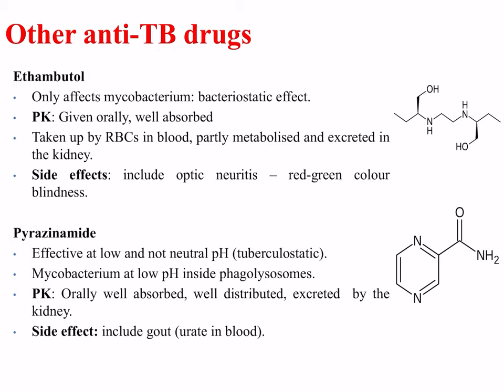Other anti-TB drugs include ethambutol, which only affects mycobacterium with a bacteriostatic effect. It is given orally and is well absorbed; it can be taken up by red blood cells, is partly metabolized, and is excreted by the kidney. Side effects include optic neuritis, which can lead to red-green color blindness. The fourth drug is pyrazinamide; it is effective at low but not neutral pH, which gives it its tuberculostatic effect, as mycobacteria are often found at low pH inside phagolysosomes after being ingested by alveolar macrophages. It is orally well absorbed, well distributed, excreted by the kidney, and side effects include gout; urate levels should be monitored in the blood.